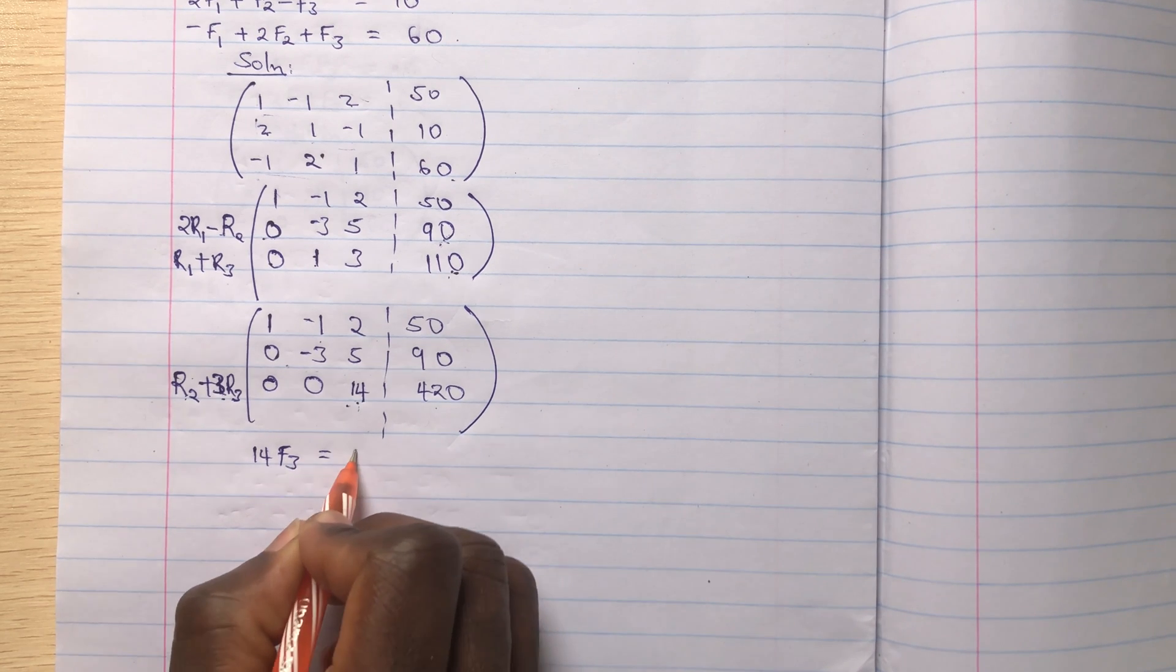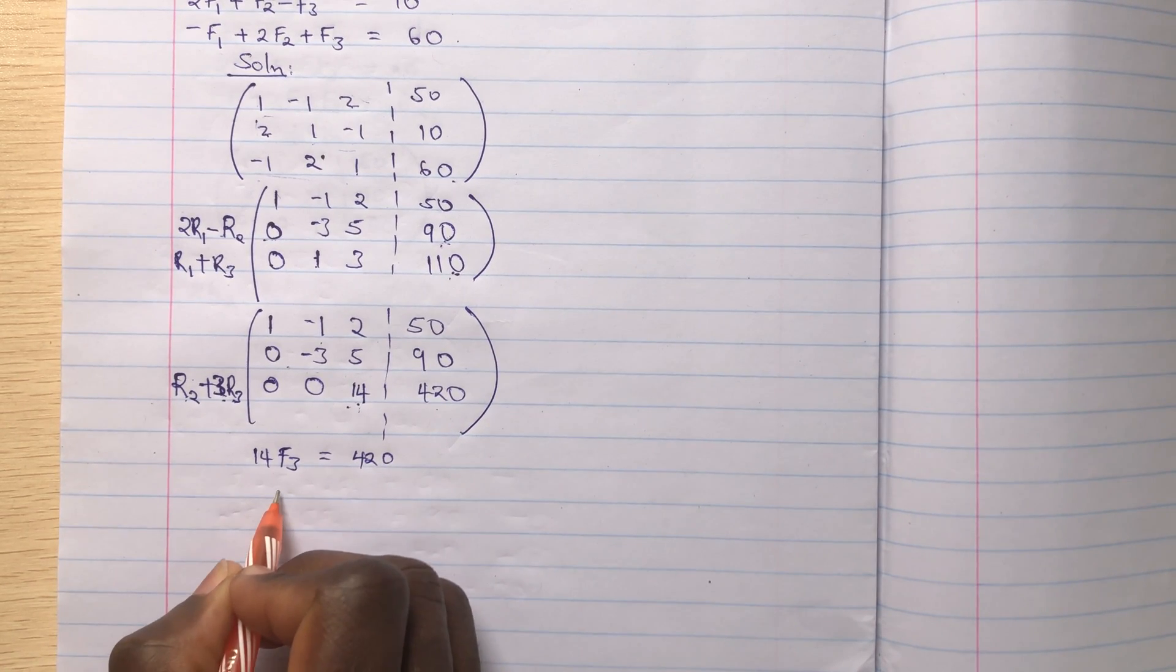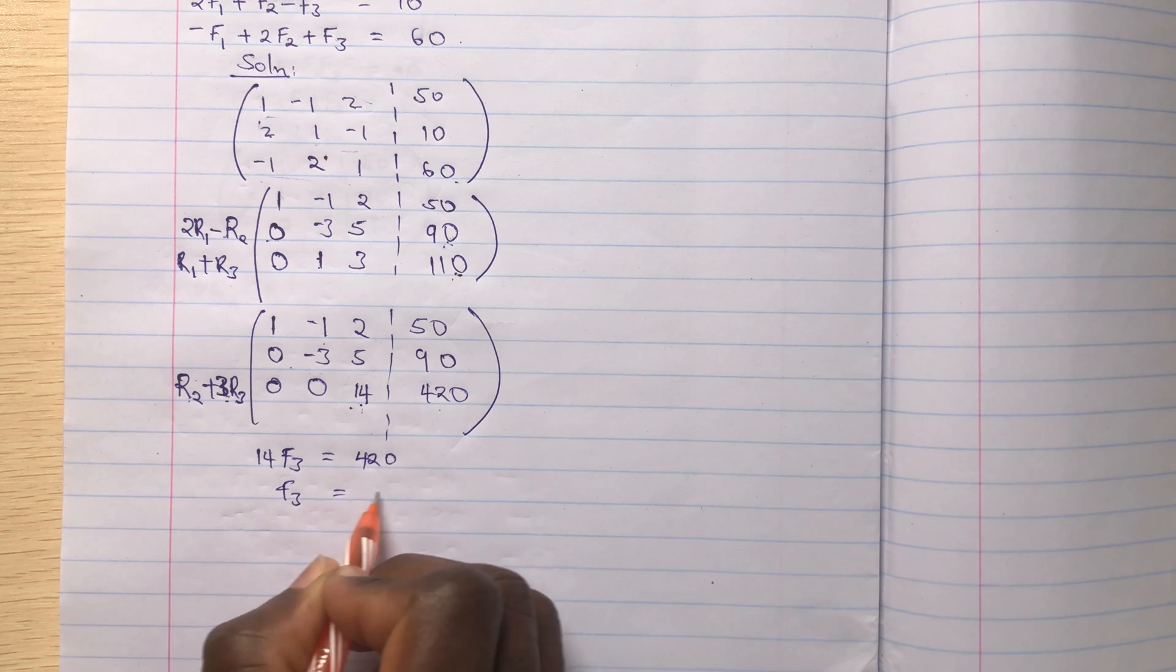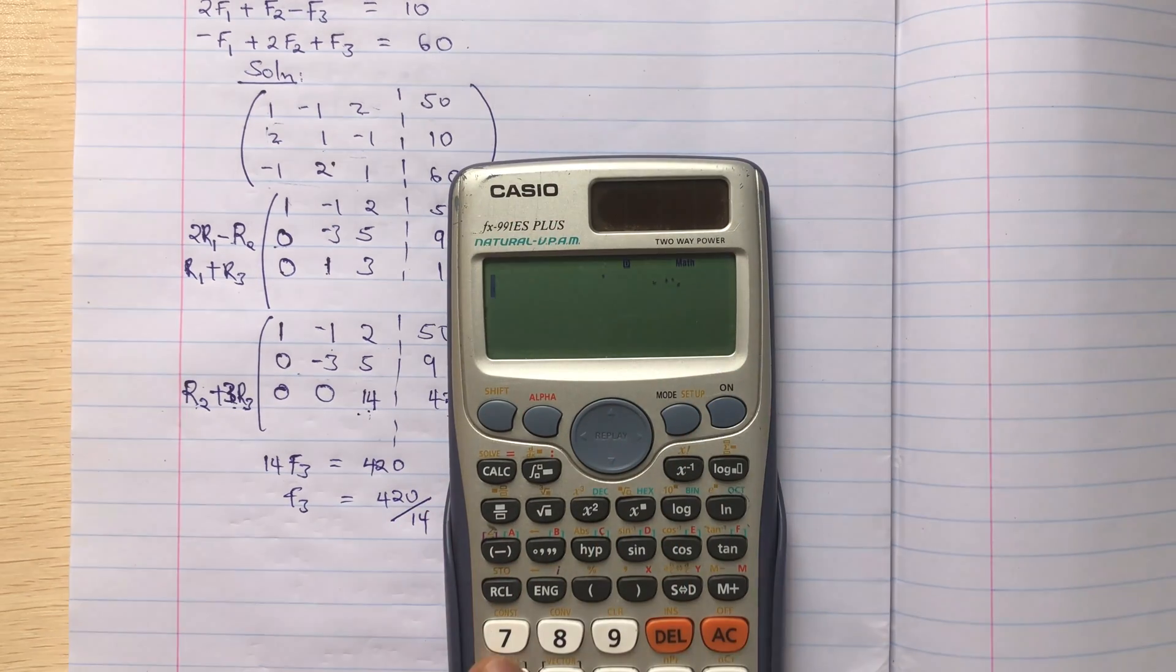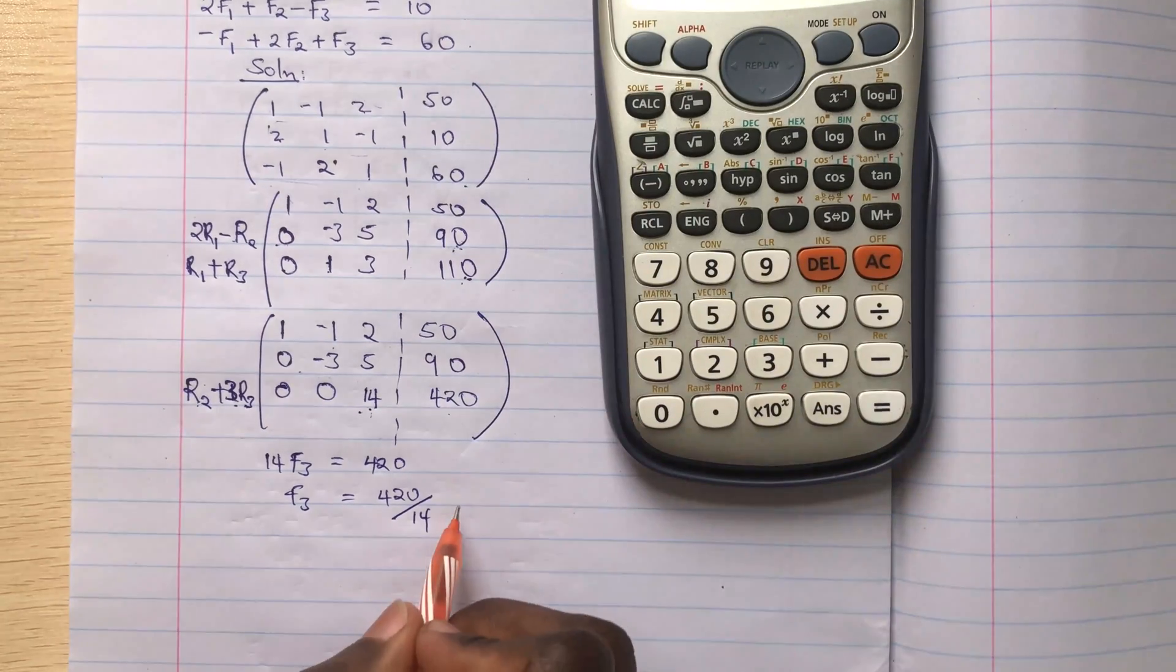So F3 gives me, so I'll do that here, 420 divided by 14, that's 30.